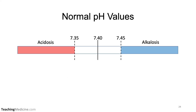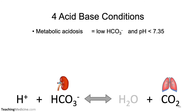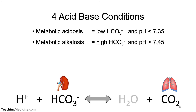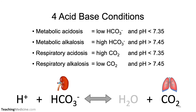For a graphical representation, we see here a pH scale. Between 7.35 and 7.45 is considered normal. Below 7.35 is acidosis, and above 7.45 is alkalosis. Looking at the four acid-base conditions: metabolic acidosis has a low bicarb and pH below 7.35; metabolic alkalosis has a high bicarb and pH greater than 7.45; respiratory acidosis is a high carbon dioxide level and a low pH below 7.35; and respiratory alkalosis is a low carbon dioxide and a pH greater than 7.45.